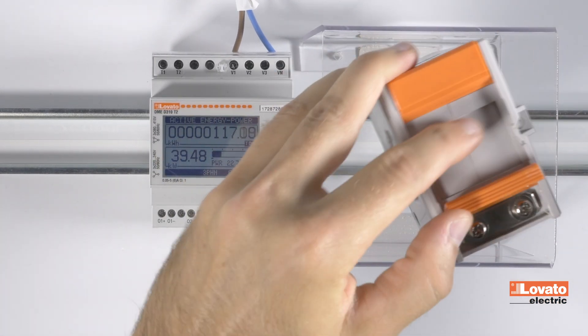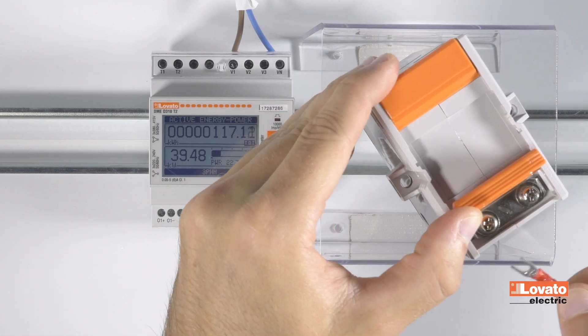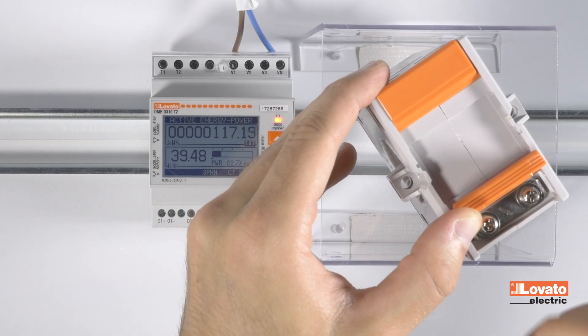To fasten the wires, the terminal is forked in this point. Just tighten the screw.